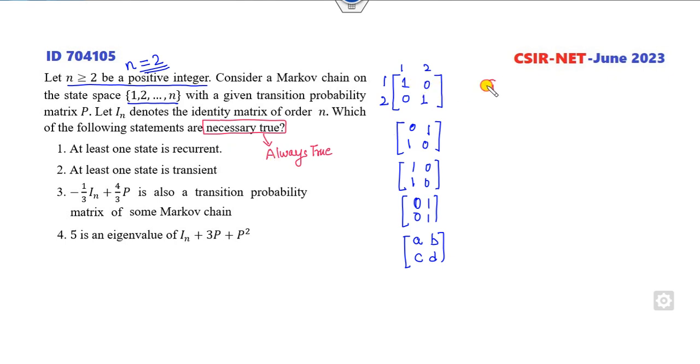Can you draw the transition diagram? State 1 to 1, state 2 to 1. So you clearly say that there is no transient state. Is there any recurrent state? Both are recurrent states. Look at this example. From 1 to 2 you have, from 2 to 1 you have. You have recurrent states but there is no transient state. So at least one transient state always true - this is a wrong option because we get a counterexample which shows this is not always true.